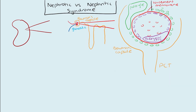Going back to our slide, let's just divide this glomerulus in half. On one side we'll do nephrotic syndrome, and on the other side we'll have nephritic syndrome. What is the difference in the pathophysiology of how these happen?